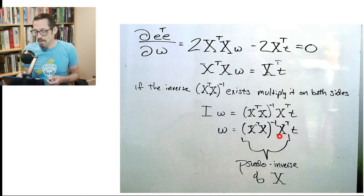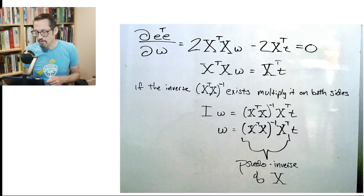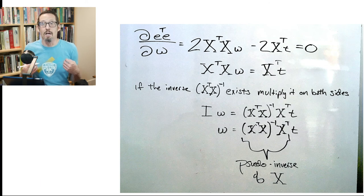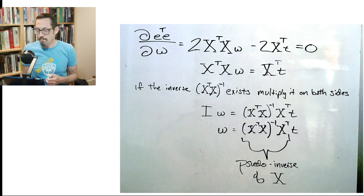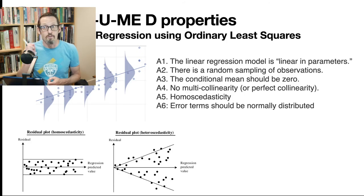Whatever this value is will determine where your parameters are. Importantly, all the design matrix stuff — the X's — are all the independent variables you're putting in. The t stuff is all the y's, all the target values, all the labels you're trying to hit. And the combination of those two in this formula gives you unique coefficients for a linear regression.